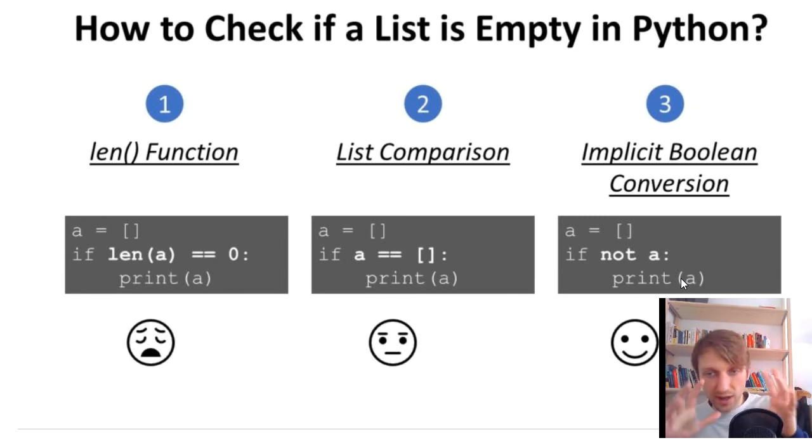It is the most concise way and also one of the most efficient ways of solving this problem. Python coders know very naturally, very intuitively about this way of checking implicit Boolean-ness of different types. You can read it like this: if not a, so if there is not an element in a, then we print a. It's natural, it's intuitive to read and understand. This is the most Pythonic way of doing it.